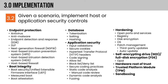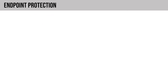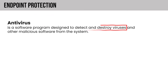So let's move into 3.2. Given a scenario, implement host or application security controls. We'll touch on endpoint protection, database and application security, OS hardening, and boot integrity. Let's start with endpoint protection. We have antivirus, which at the root of it is designed to detect and destroy viruses. What it does with a virus is configurable — we may quarantine, for example. And then we have anti-malware, which, similar to antivirus, stops threats.